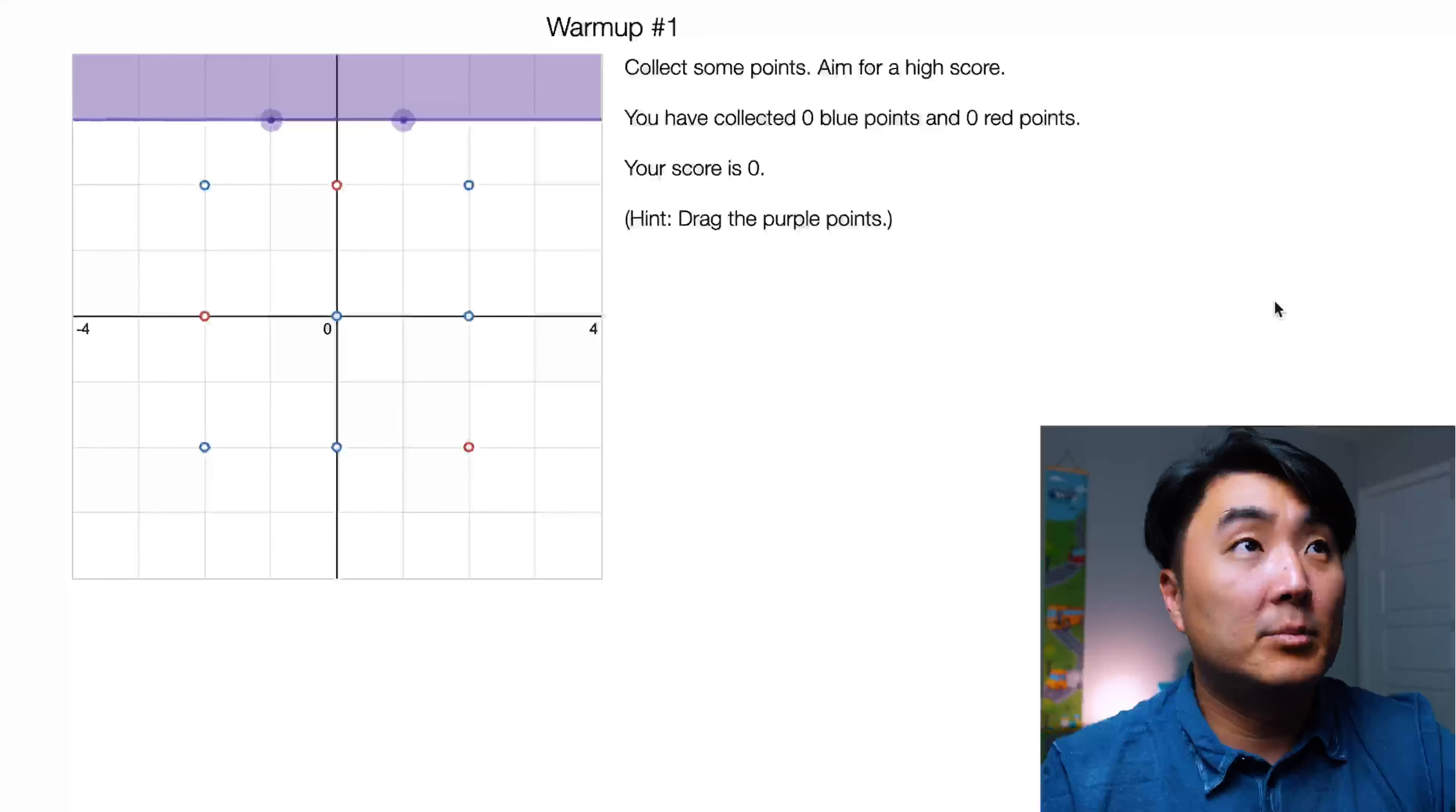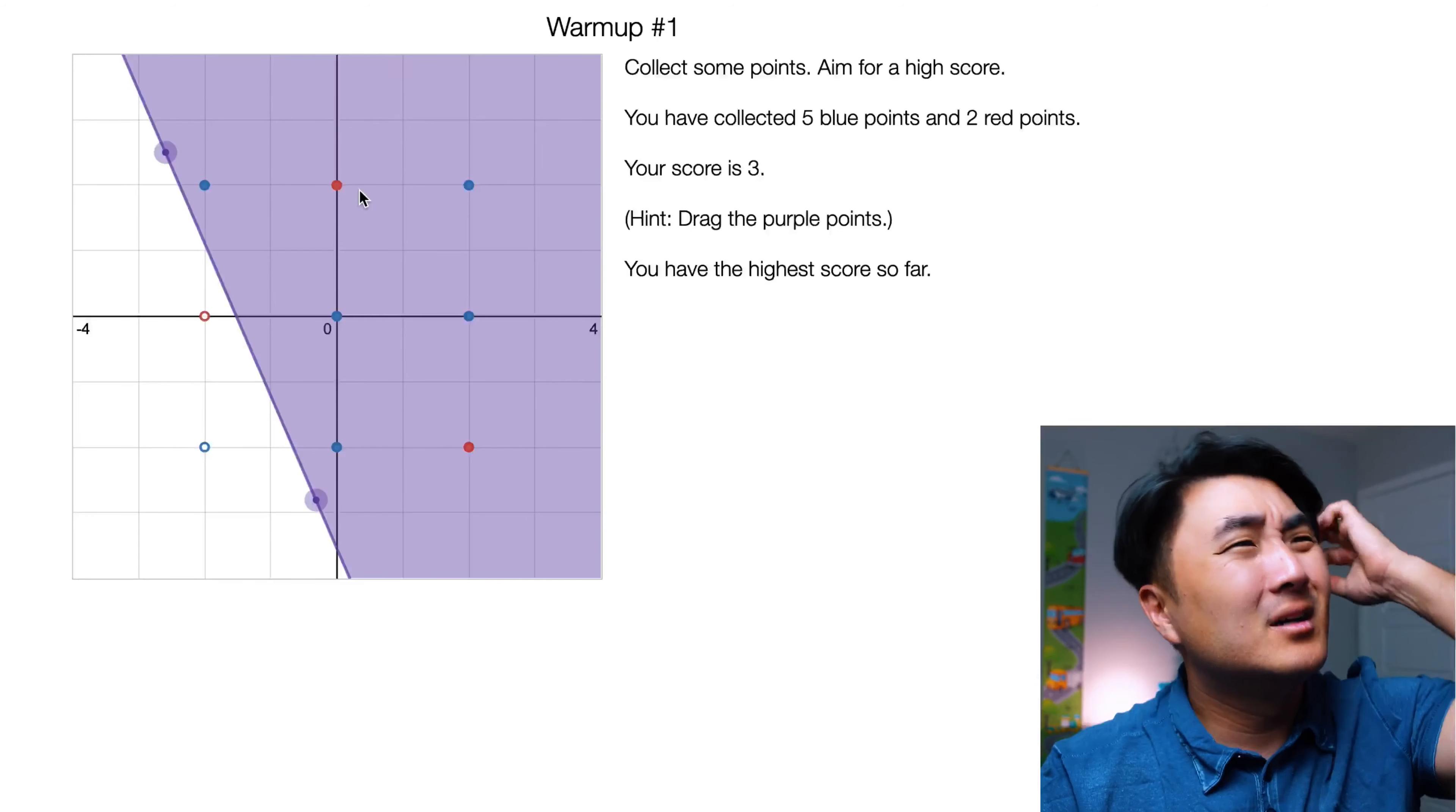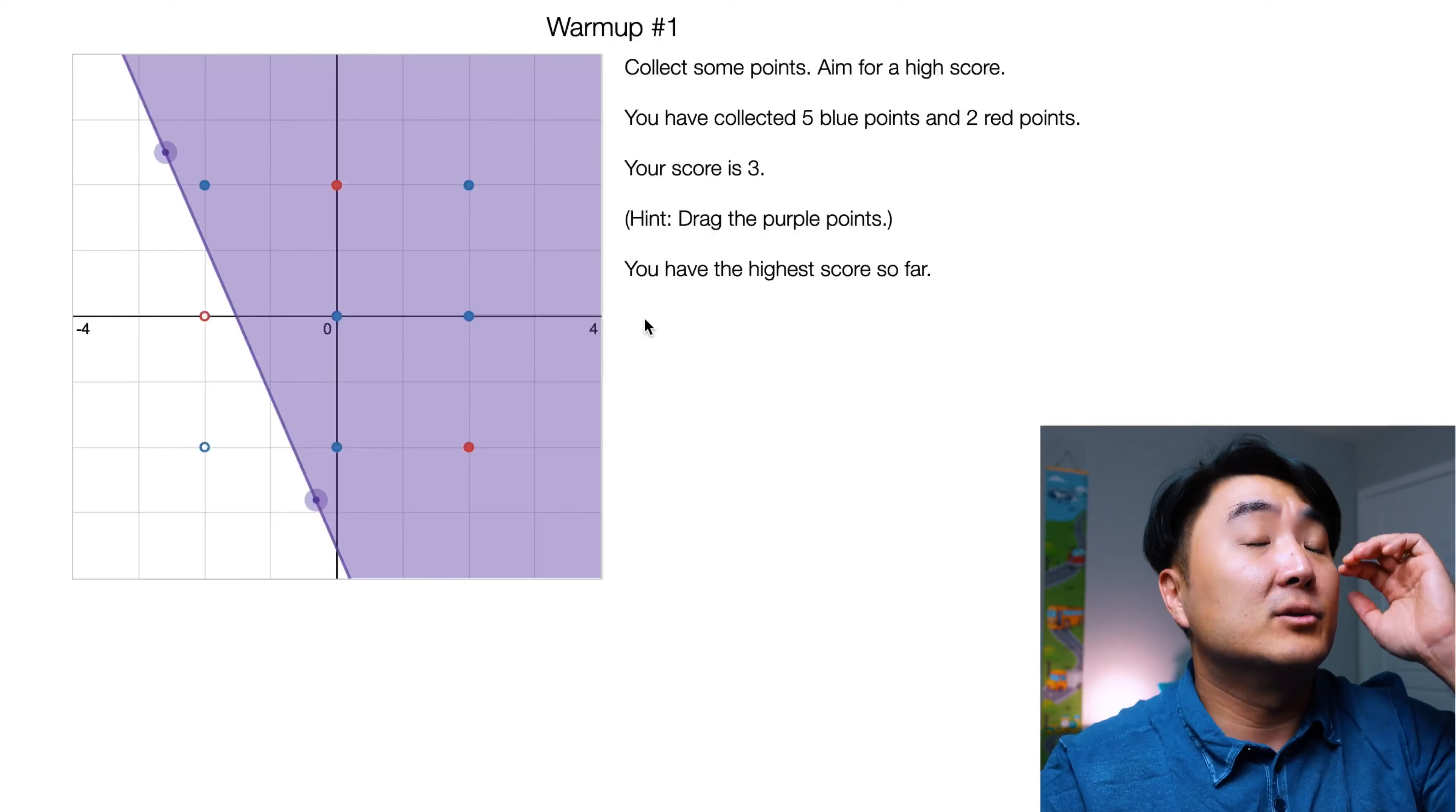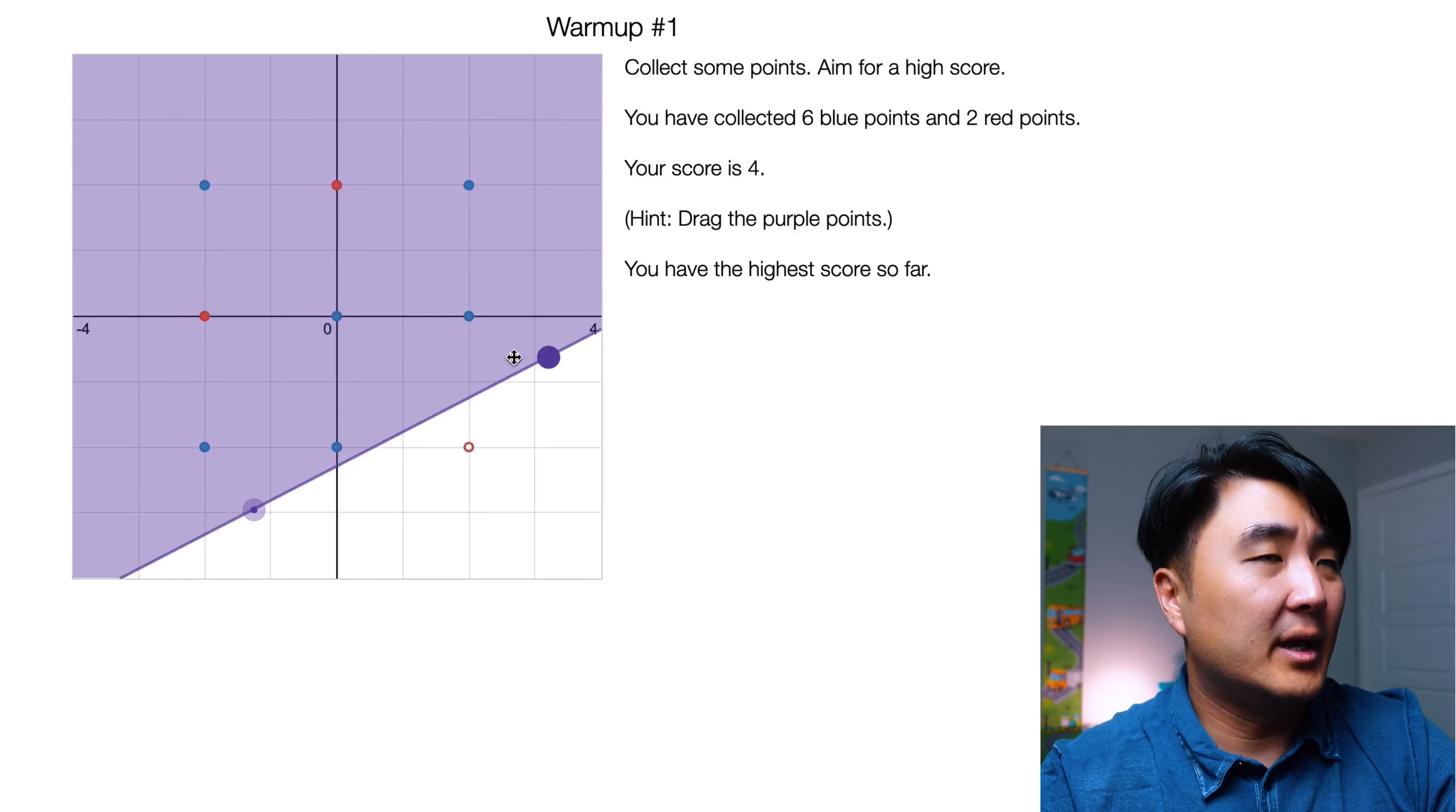Here we are at screen one, warm-up number one. We're going to collect some points, aim for high score. This one's kind of easy. We're just going to drag those two purple dots until we get the biggest ratio of blue dots to red dots, right? Because the blue and the red dots will cancel each other out, so you have to fiddle with this until you get to the point where you have the highest score possible. Right now I'm at three, and because I'm the only one doing this, I'm always going to have the highest score, but you might be doing this with a classroom full of your peers, so in that case, you might be competing for the highest score. Let me kind of figure out where am I going to drag these points to get the most blue points possible.